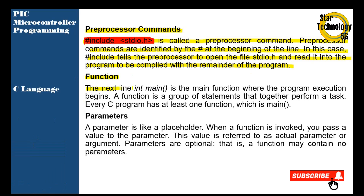The next part is a function. The line int main is the main function where the program execution begins. A function is a group of statements that together perform a task. Every C program has at least one function, which is main. In the main function we can add data, manipulate data, and anything we want to do.